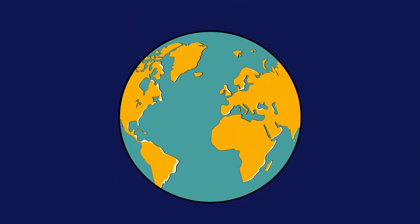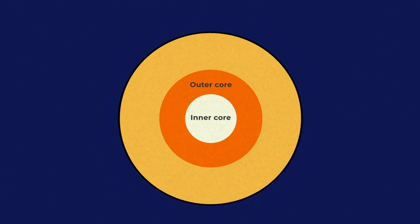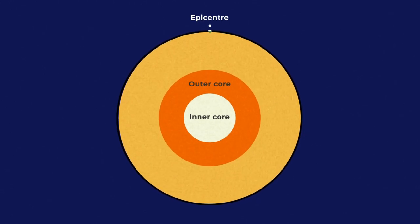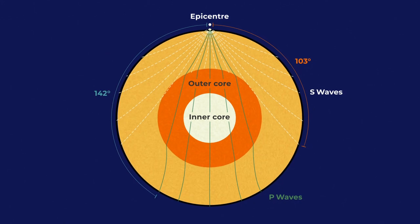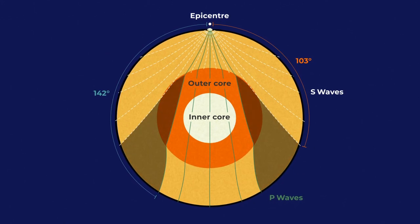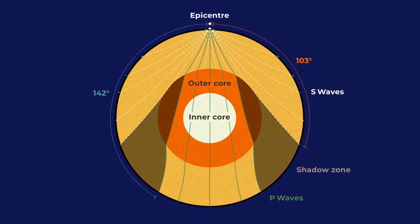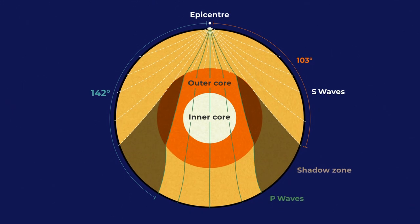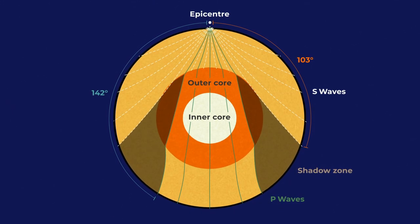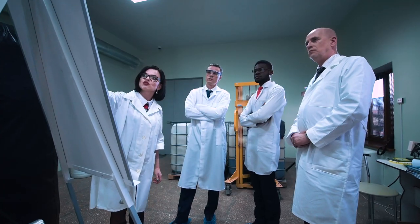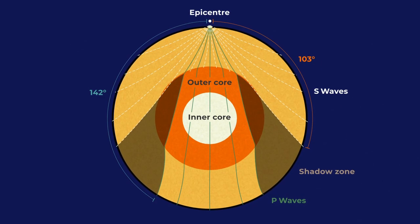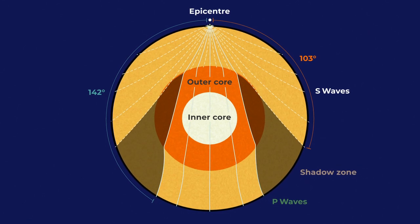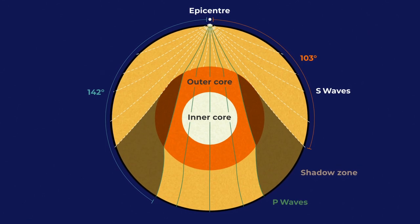Earthquakes also tell us about the interior structure of the Earth. When there is an earthquake, there is an area between 103 to 142 degrees from the epicenter where no direct seismic waves are detected. However, beyond 142 degrees, P waves are again detected. Scientists have hypothesized that this is due to there being a liquid outer core, which the S waves cannot travel through, and that greatly slows down and refracts the P waves.